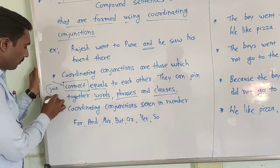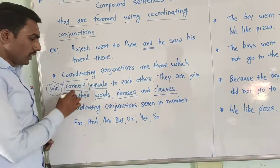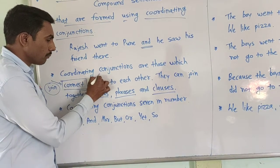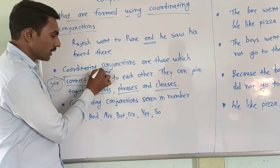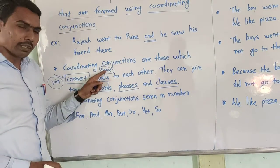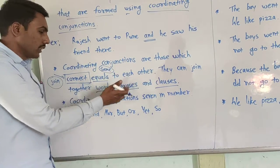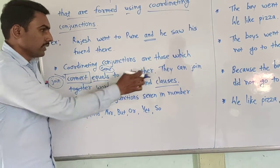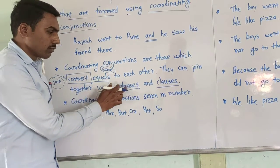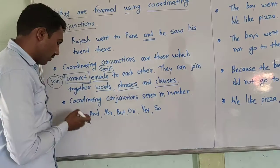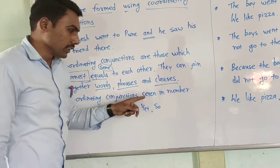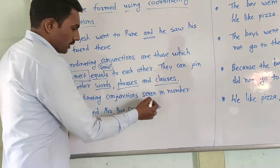Remember this — connect means join. Join equals, and equals means same. So coordinating conjunctions join together words, phrases, and clauses. That is called coordinating conjunctions, and coordinating conjunctions are seven in number.